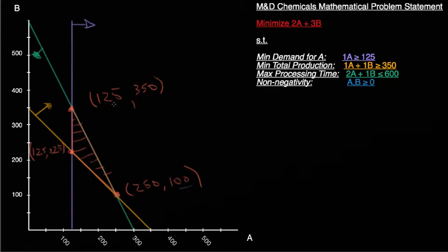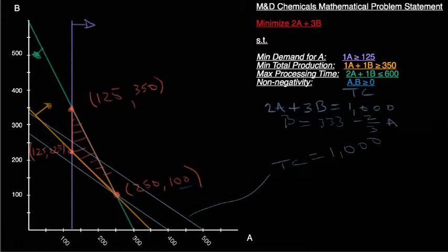So now that I have my extreme points, those are the potential solution values to the problem. The solution to this problem is either going to be produce 125 of A and 225 of B, or produce this combination of A and B, or this combination. So to determine which of these extreme points is the solution, I need to graph my objective function. And I have taken the liberty of doing that here. The bottom blue line here, this blue line is going to be my objective function.